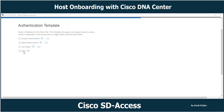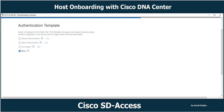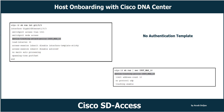First, I'm going to explain about 'None' — meaning no authentication template. This is unsecure and is optimal for networks that do not support authentication or require a static configuration. With no authentication template selected, the fabric edge ports are not configured for port authentication. Here you can see the configuration: show running-config interface GigabitEthernet 1/0/3 — no authentication commands are applied.